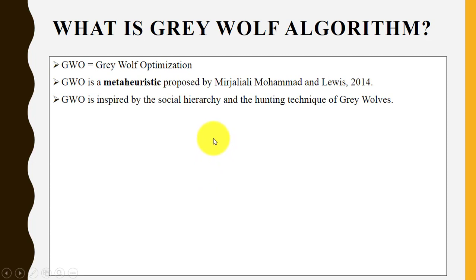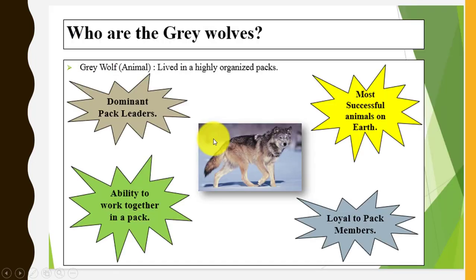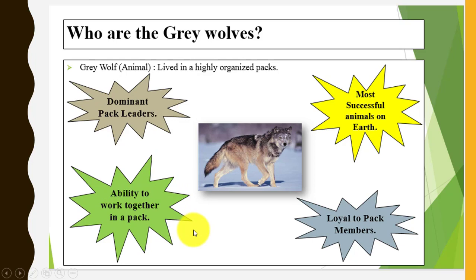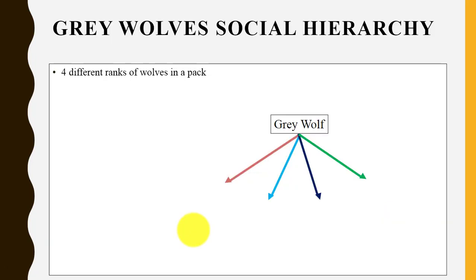This is a meta-heuristic algorithm inspired by the social hierarchy and hunting technique used by gray wolves. Gray wolves live in a highly organized pack, and the pack size can be 5 to 12 wolves. They have dominant pack leaders, are loyal to their pack members, and are among the most successful animals on earth because of their ability to work together.